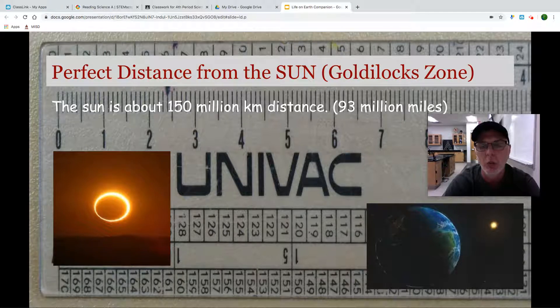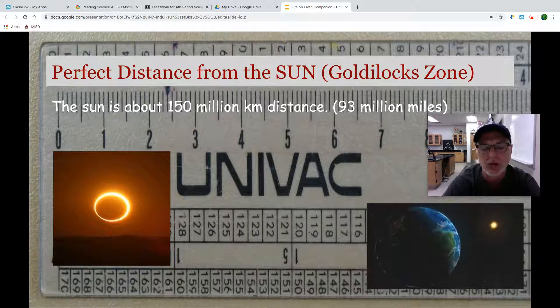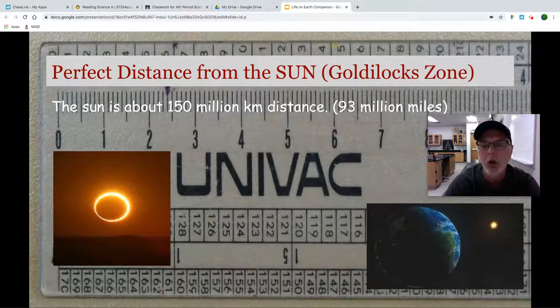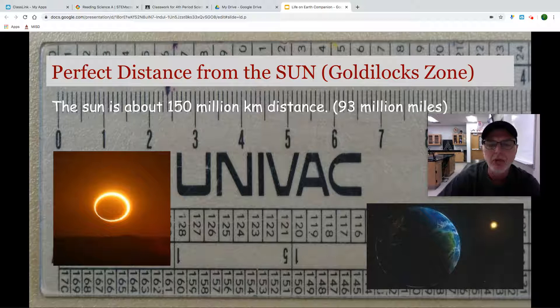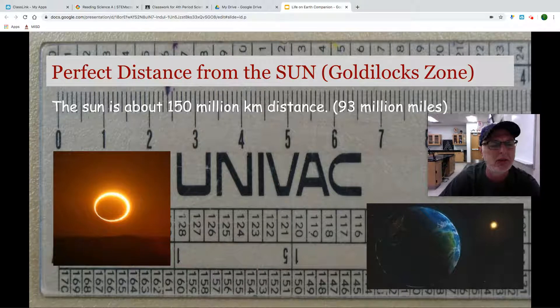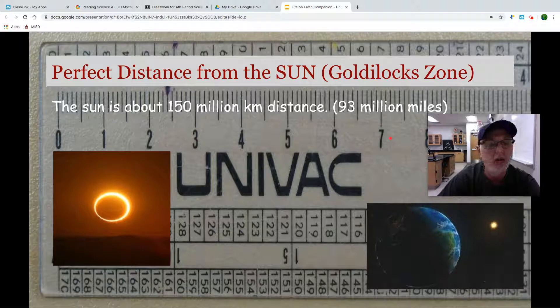So there are times that we are further from the sun than we are at other times of the year. Interestingly enough, North America, where the United States is located, we are actually closer to the sun during our winter. However, this is all based on the tilt of the Earth and not distance. So bear that in mind, that's an 8th grade topic that you'll be investigating obviously in 8th grade next year.